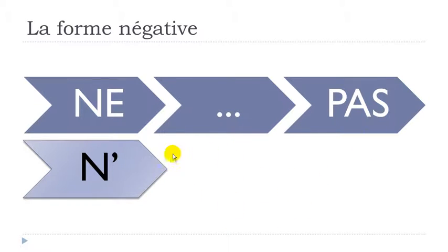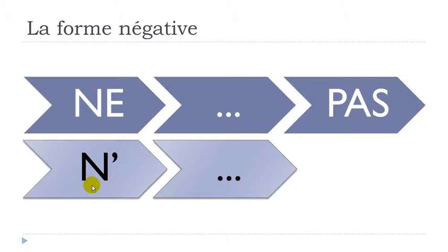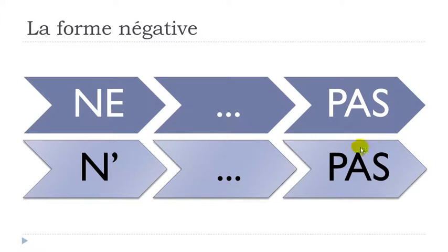Remember: in some cases we will have verbs starting with a vowel, or with H — H plus a vowel — and in French H is not pronounced. So for these verbs, 'ne' will have to drop its E and become 'n'' apostrophe. Then comes the verb, and after that it doesn't change — it will still be 'pas'.